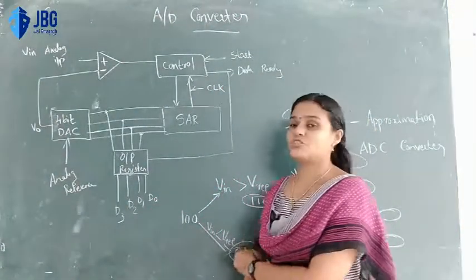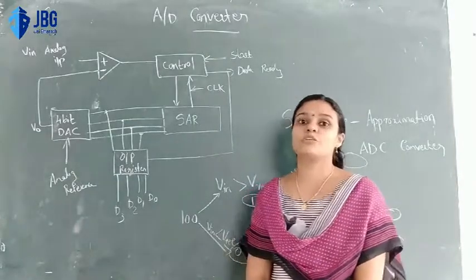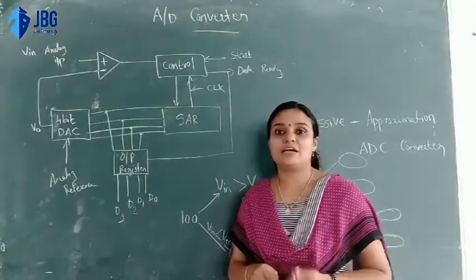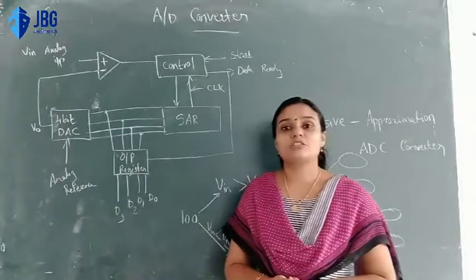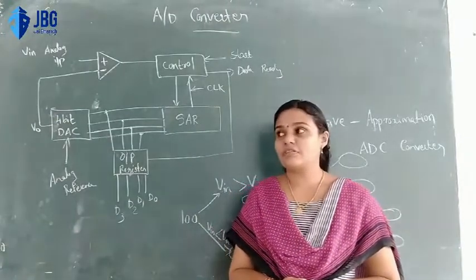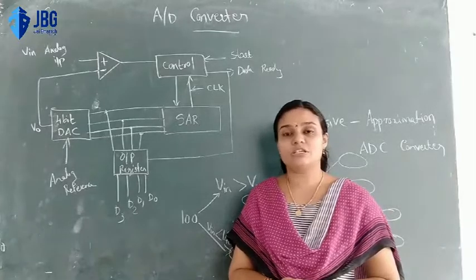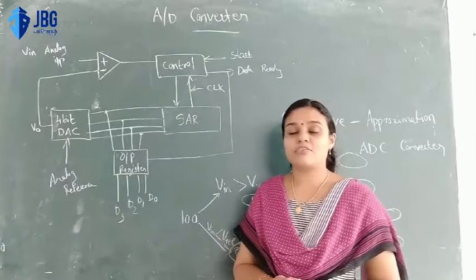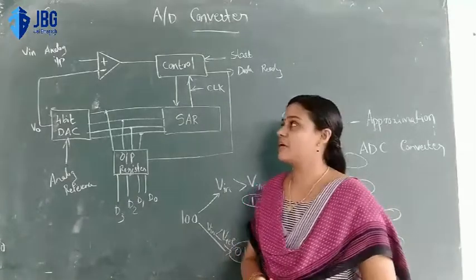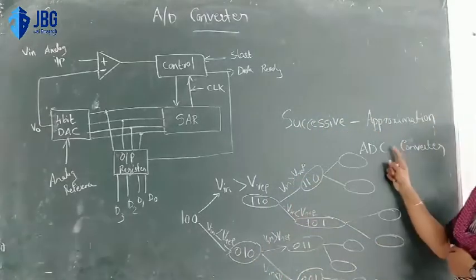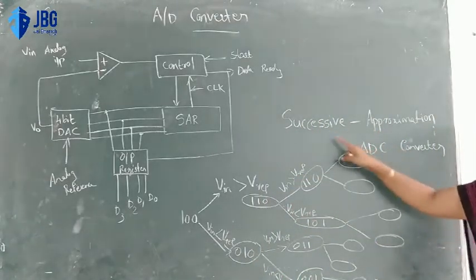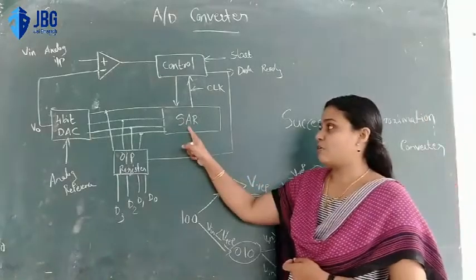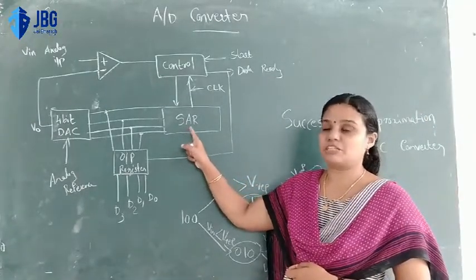Good morning dear students. The next topic is analog to digital conversion. ADC - analog to digital conversion using successive approximation. The successive approximation ADC uses a comparator and a successive approximation register.